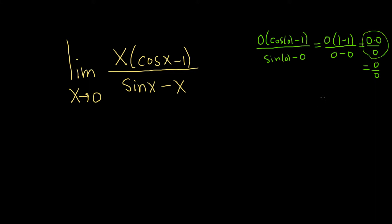We get what's called an indeterminate form. This indeterminate form allows us to use something called L'Hôpital's rule. Whenever you have 0 over 0 or infinity over infinity, you can use L'Hôpital's rule.